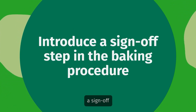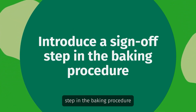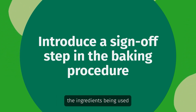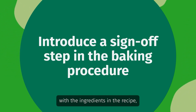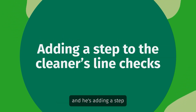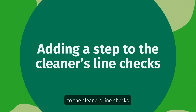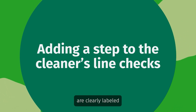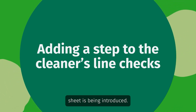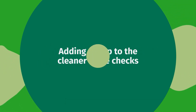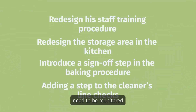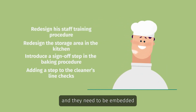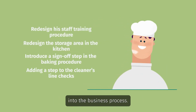He's introduced a sign-off step in the baking procedure where the baker must cross-check the ingredients being used with the ingredients in the recipe. He's also adding a step to the cleaner's line checks to ensure that ingredient stations are clearly labelled, and a post-cleaning check sheet is being introduced. These solutions need to be monitored to ensure that they've had an impact and need to be embedded into the business process.